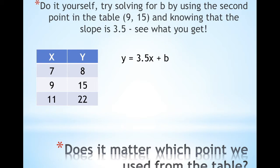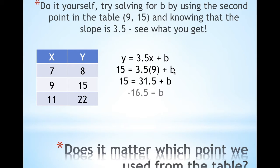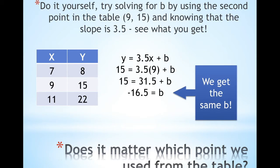Here's my rule with my slope, not knowing what B is. Using the second point (9, 15): 9 is x, 15 is y. I plug it in — 15 = 3.5 times 9. And look, I get the exact same B as I did with the first point. When I used (7, 8) I got negative 16.5, and now when I use (9, 15) I also get negative 16.5.